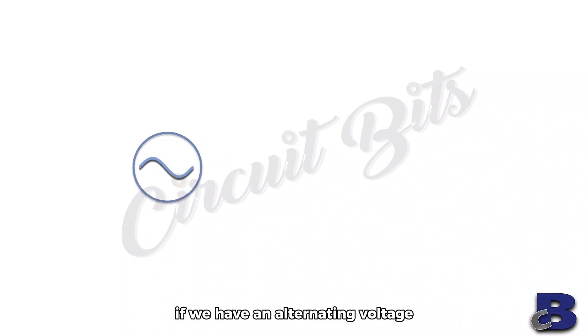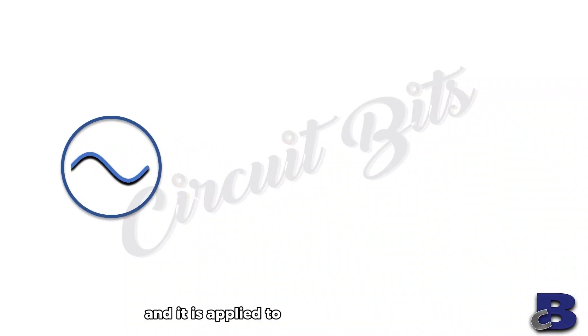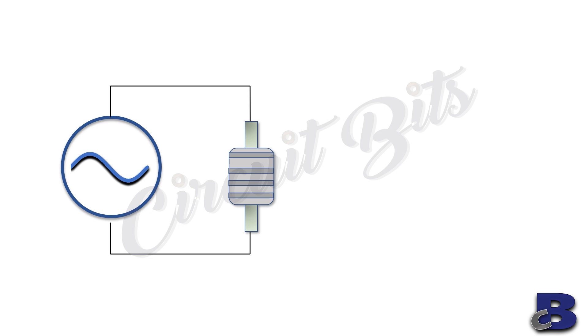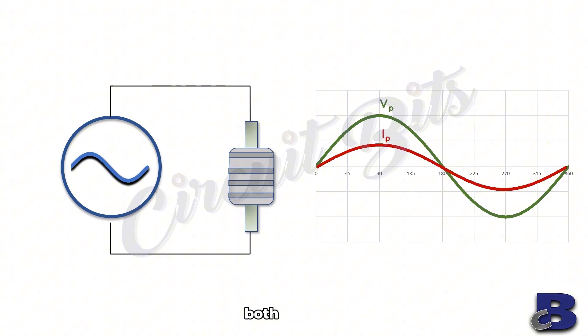If we have an alternating voltage and it is applied to a purely resistive load, the current through the resistor and the voltage across the resistor has a sinusoidal waveform, both in phase.